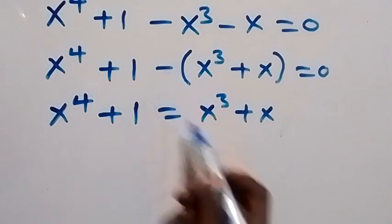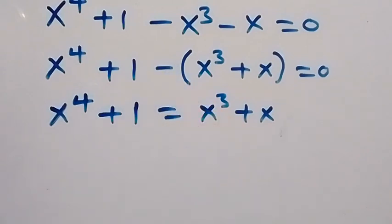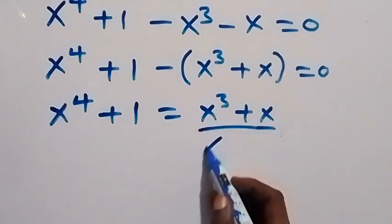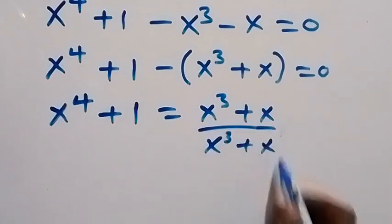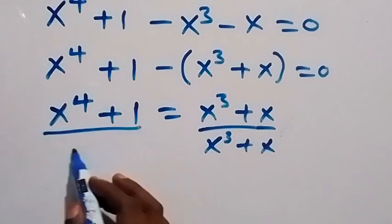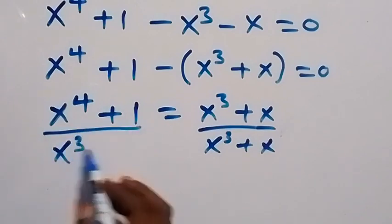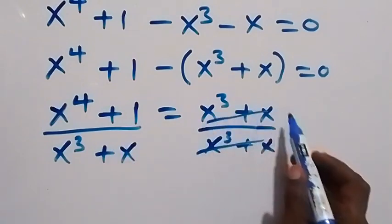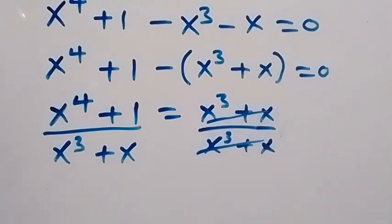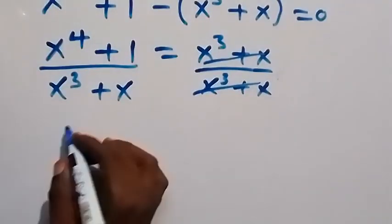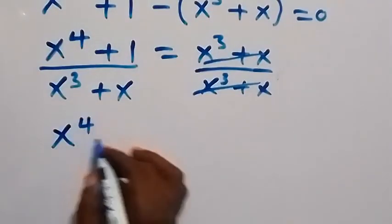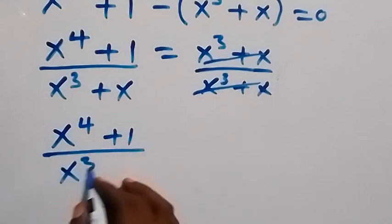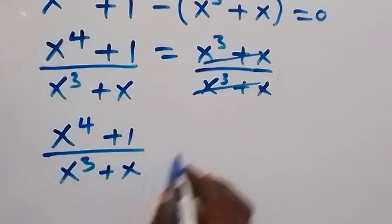Now let's make this side equal to 1 and divide both sides by x raised to power 3 plus x. Dividing both sides, these cancel out and become 1, so we have x raised to power 4 plus 1 over x raised to power 3 plus x equals to 1.